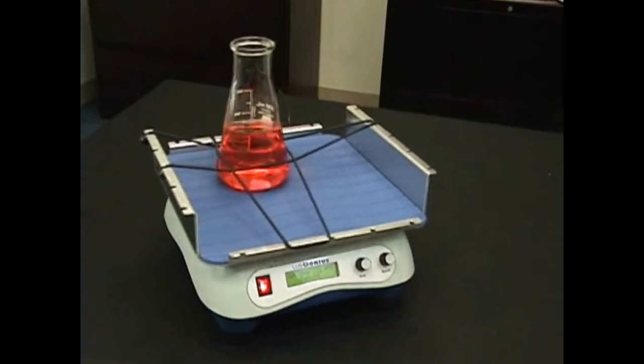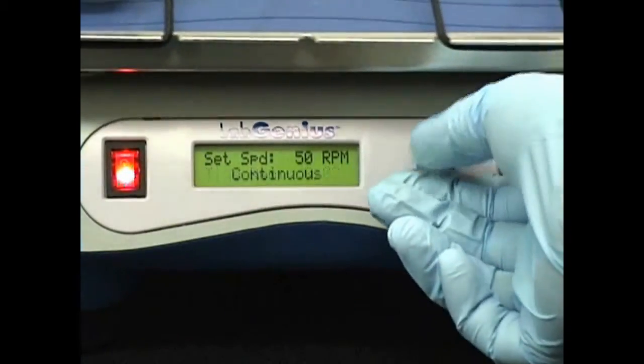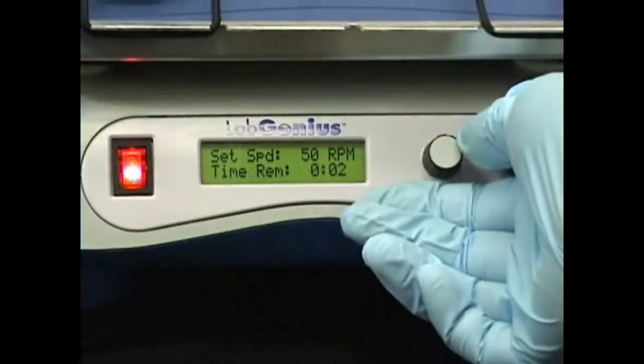Digital display updates, shows, and tracks preset timed run, continuous run, and RPM settings, improving test procedure repeatability.